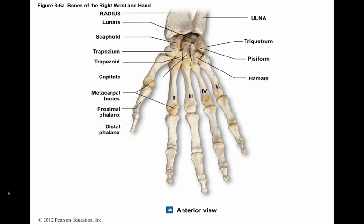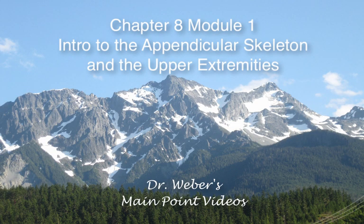Each of the other fingers has three phalanges: proximal, middle, and distal. This ends Chapter 8, Module 1: Pectoral Girdle and Upper Extremities.